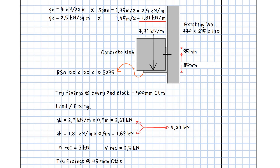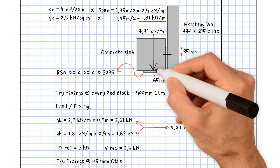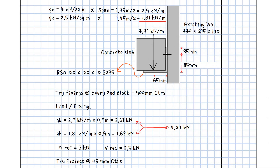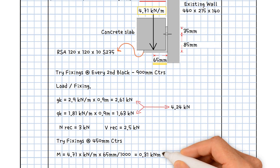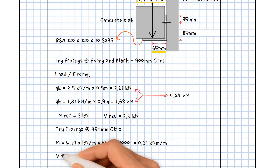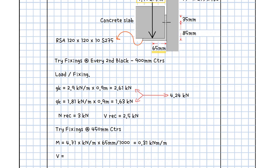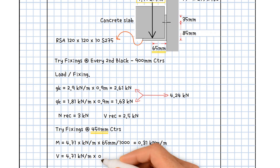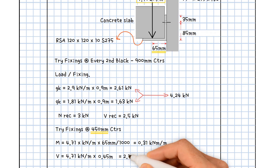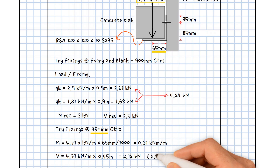Assume that the eccentricity of the support angle is 65 mm. As a result, the bending at the heel equals the total reaction 4.71 kN per metre times 65, divided by 1000, giving a value of 0.31 kNm per metre. The shear force on the anchor equals the total reaction 4.71 kN per metre multiplied by the anchor spacing 0.45 m, resulting in a value of 2.12 kN. That's less than 2.5 kN.